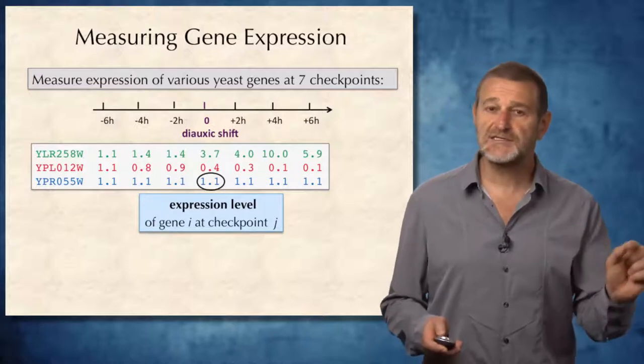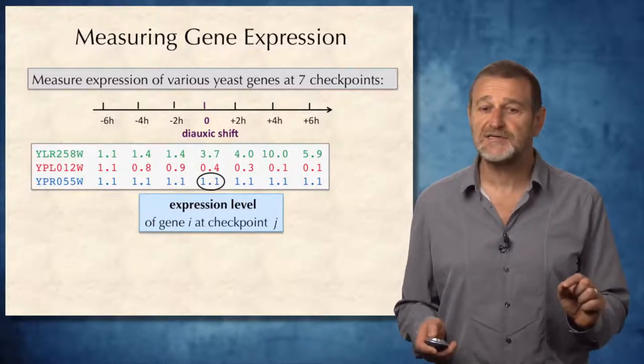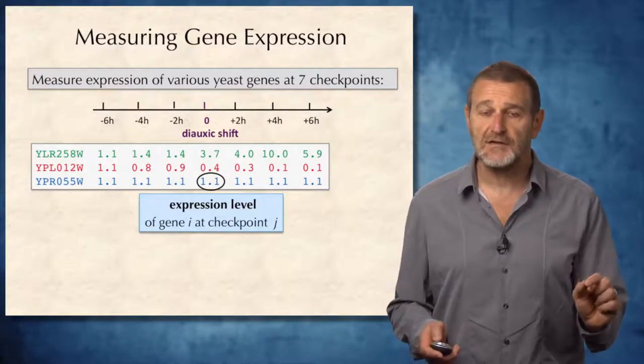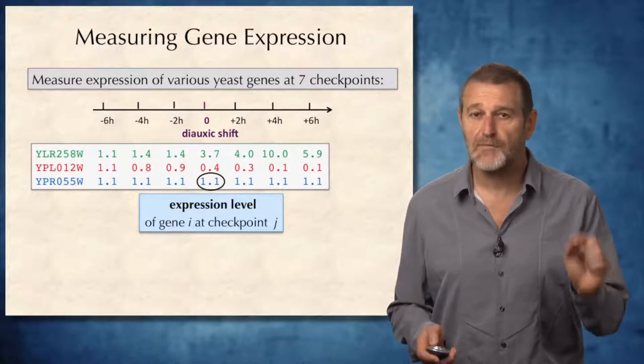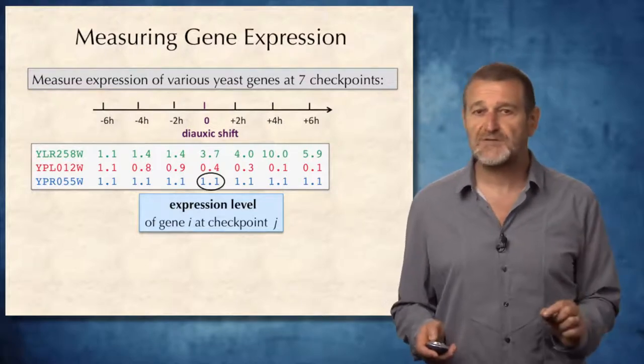Each element in the resulting 3 by 7 matrix is the expression level of gene I at checkpoint J. What is the expression level?